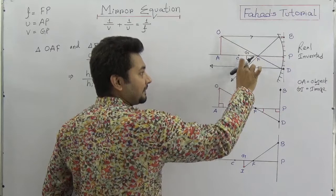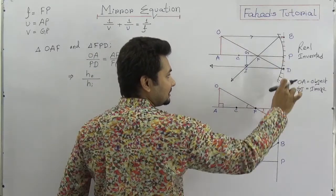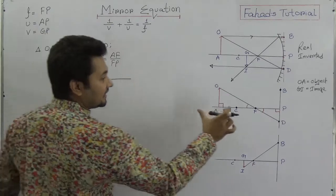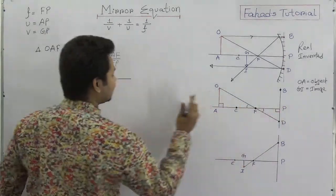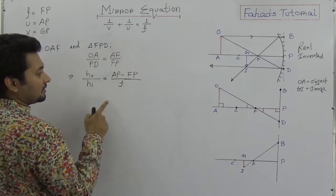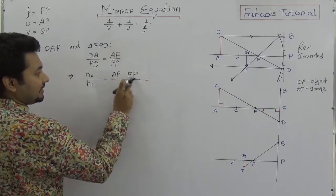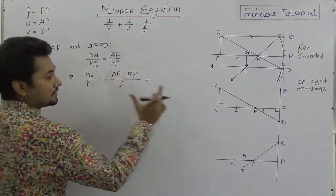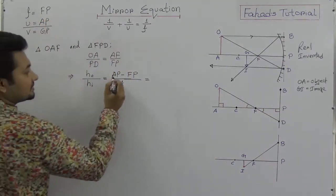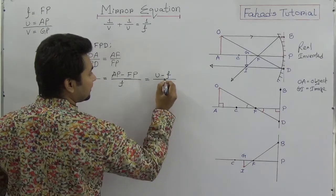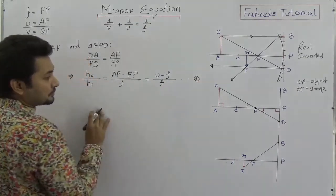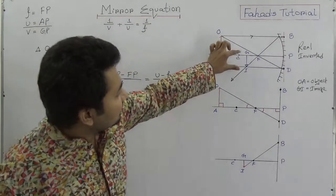If you see that AF is actually AP minus FP, which equals U minus F. So the distance of the object is AP = U, and AF = U minus F. So we get from these equations: OA/GI = (U - F)/F. This is equation number one.